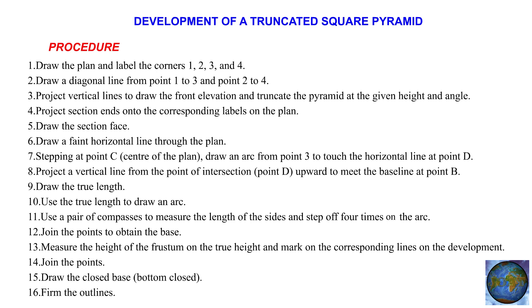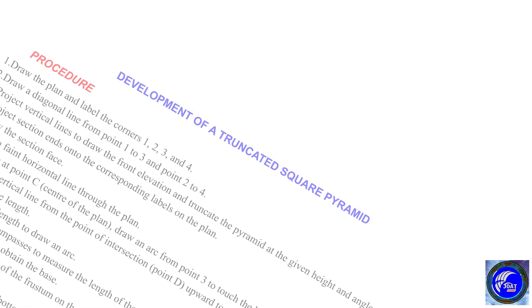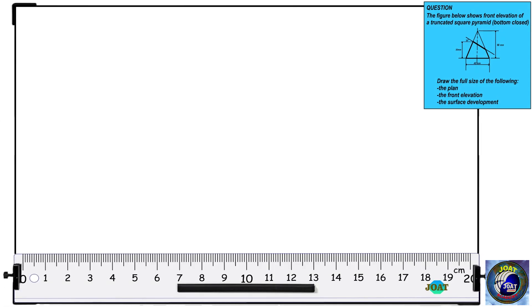This is the procedure we are going to use to draw the surface development of a truncated square pyramid, bottom closed. Surface development of a truncated square pyramid procedure. Step 1: Draw the plan and label the corners 1, 2, 3 and 4.